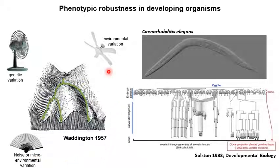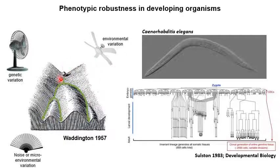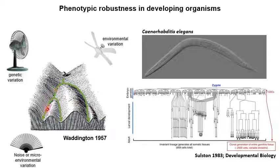Waddington's idea of canalization is essentially a measure of robustness. You can see here the ball that rolls down the hill into each of these grooves, and the grooves at the bottom represent the phenotype outcome. The higher the ridges, the more robust the valleys are and the more likely the ball is to roll down into them.